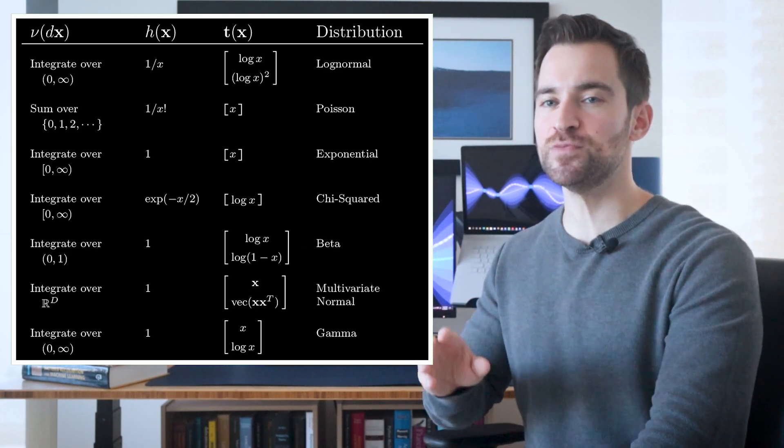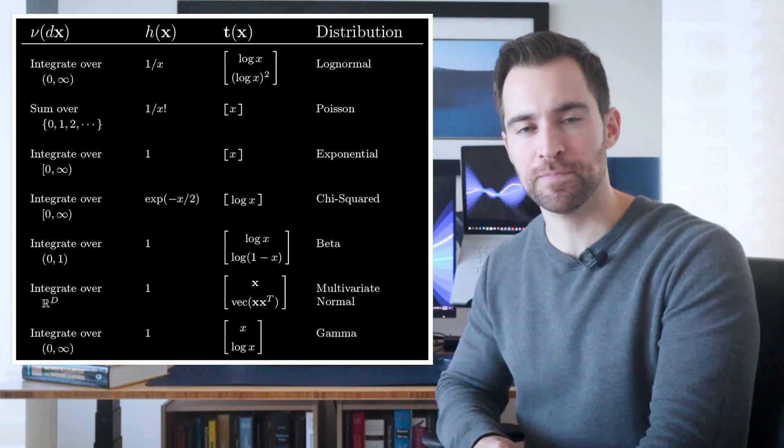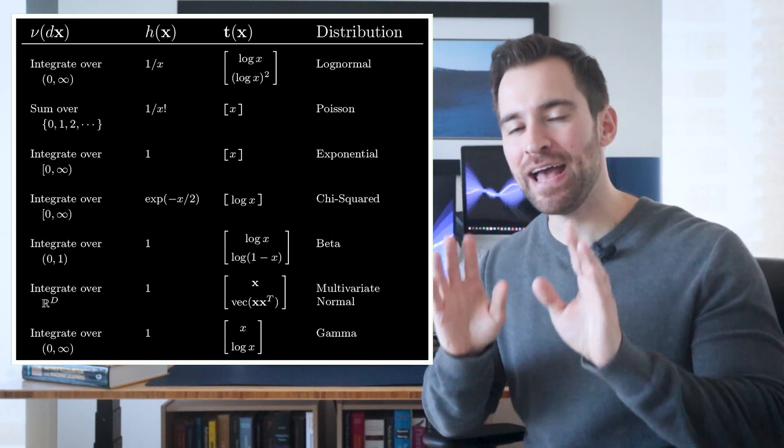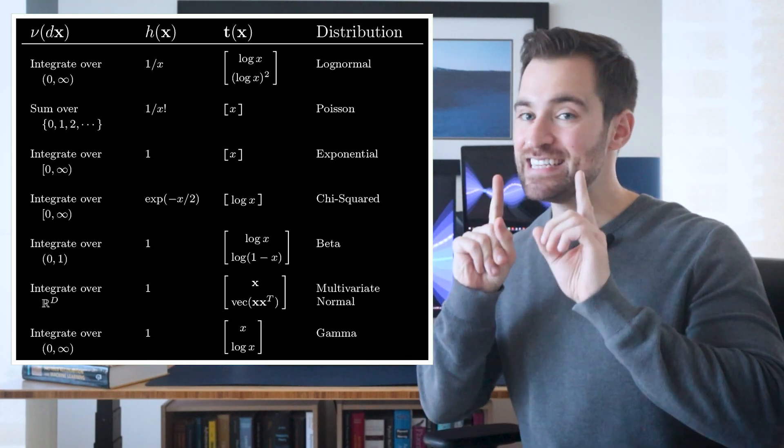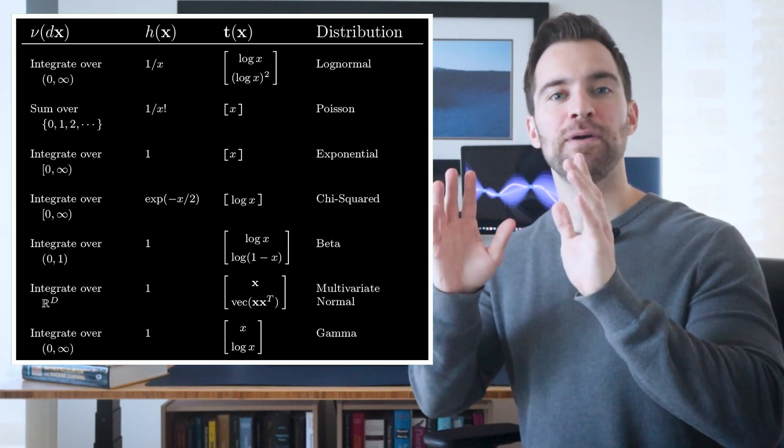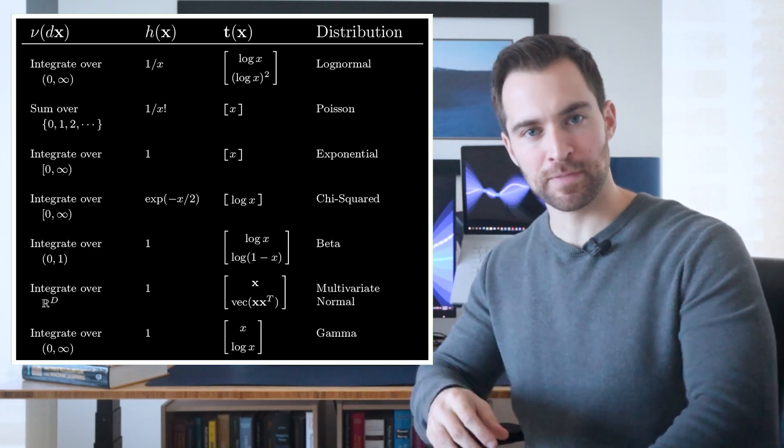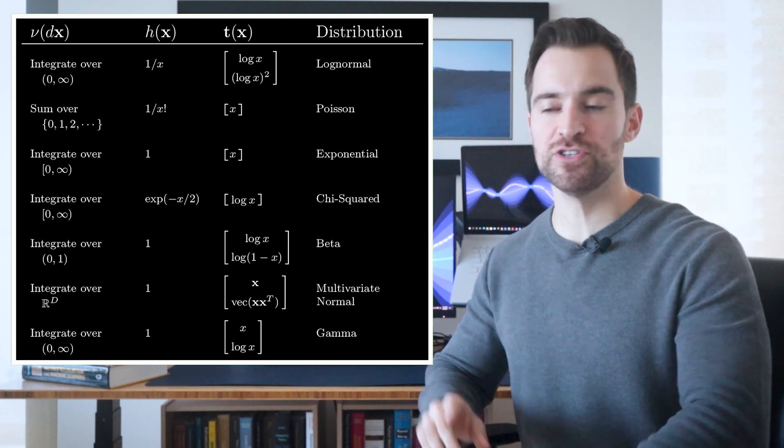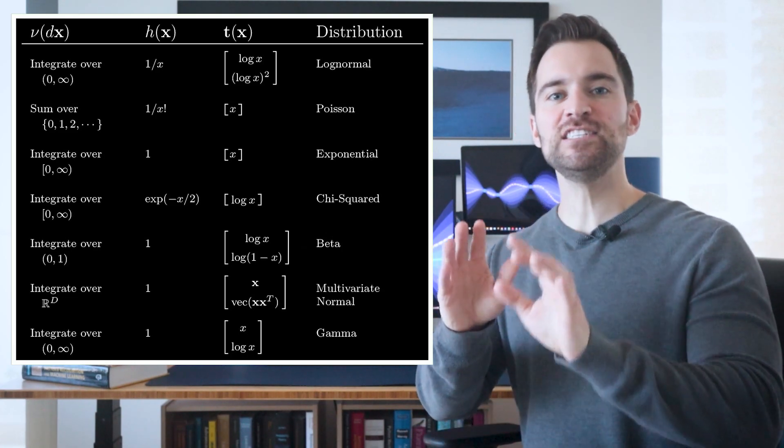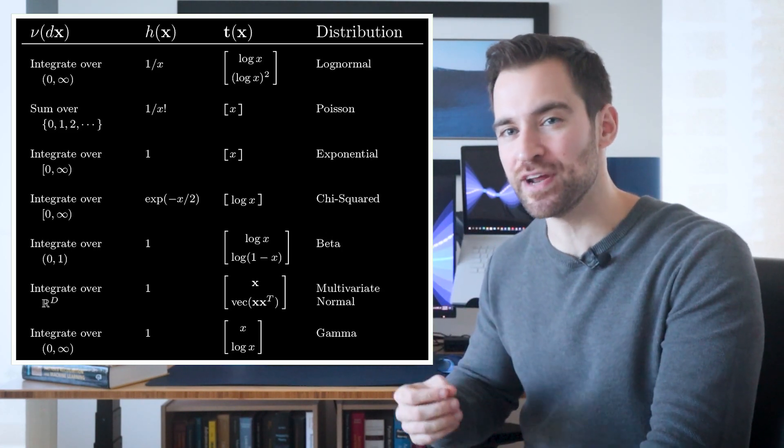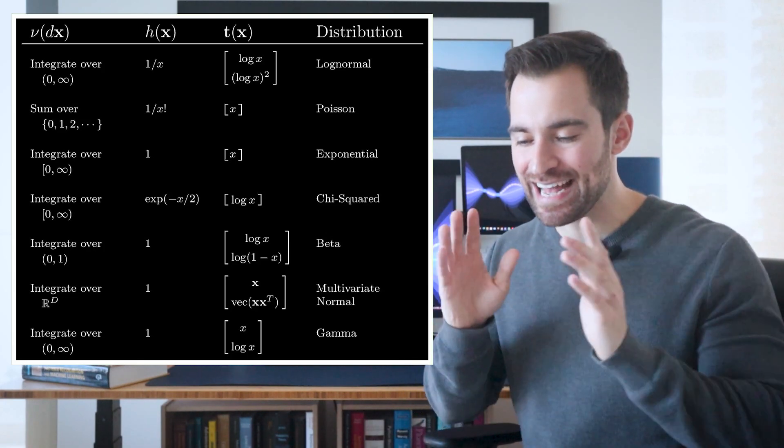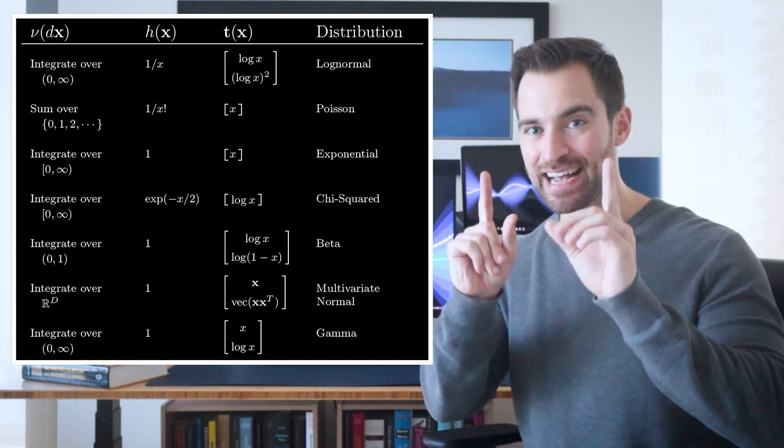But at this point, I should point out what you can't reach from here. First, the uniform distribution is not within this family. That's because its domain depends on the parameters. That is a no-go for this family. The possible x values need to be a fixed set. Second, the student t distribution isn't in here either. This is because the term that would appear in the exponent can't be factored into our nice and neat dot product. And at this point, we're done. Sort of.